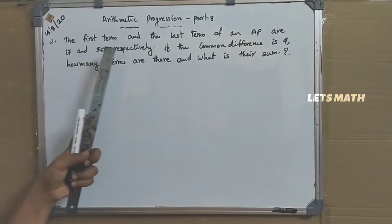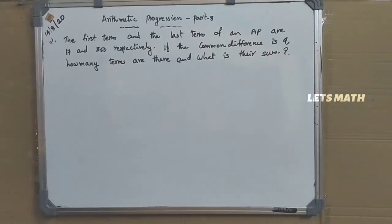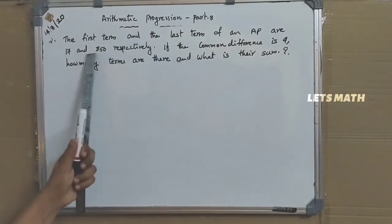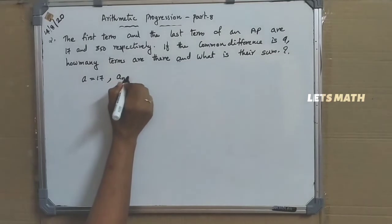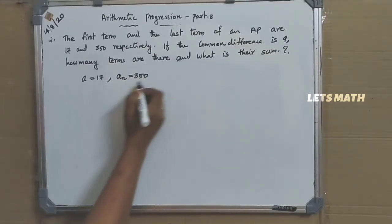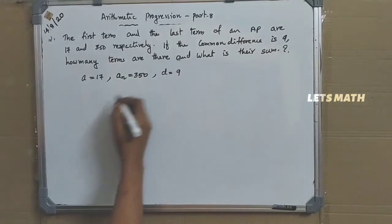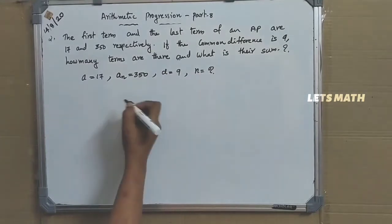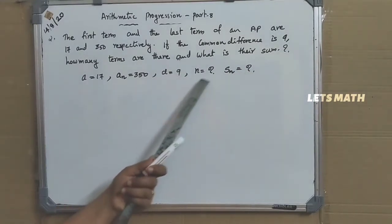Second question: the first term and the last term of an AP are 17 and 350 respectively. If the common difference is 9, how many terms are there and what is their sum? So A equal to 17, AN equal to 350, and D equal to 9. It is asked to find the number of terms and the sum SN.